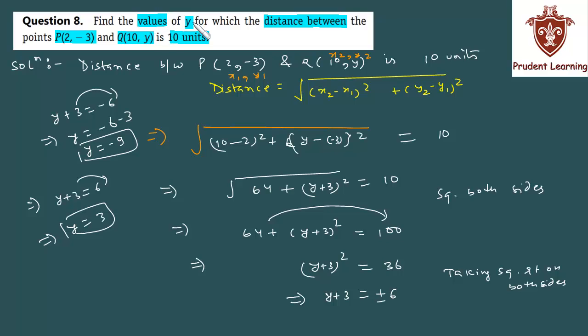And in the question, if you see, it says find the values of y - it's plural here, not value. So you have found 2 values of y: one is 3 and one is minus 9. Therefore, the values of y are 3 and minus 9. So, this completes our solution. Let us see the next question.